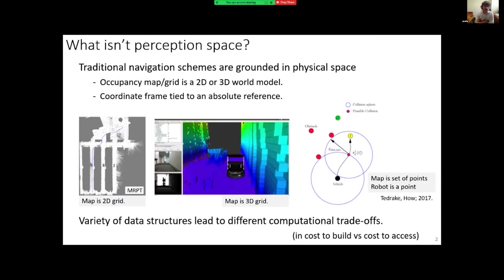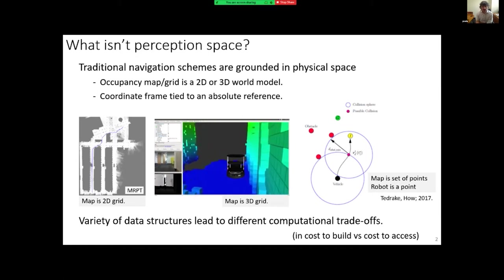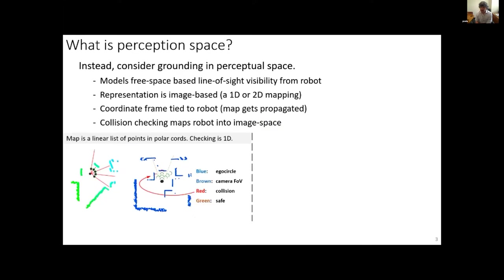Different data structures shift the computational trade-off curve — there's a cost to build the data structure and a cost to access it. Perception space operates differently: it takes the perspective of the world as being image-like. It only holds locally because the world is boiled down to line-of-sight visibility from the robot. It lives in the robot's frame.